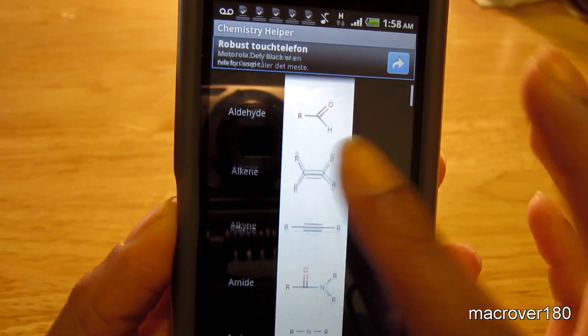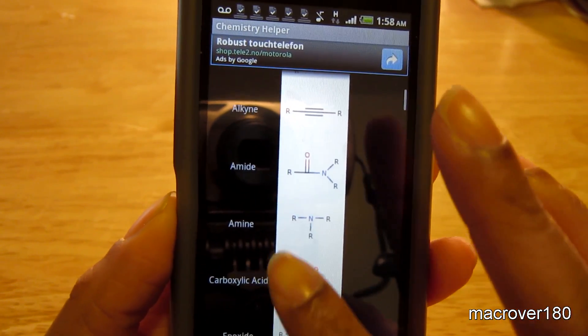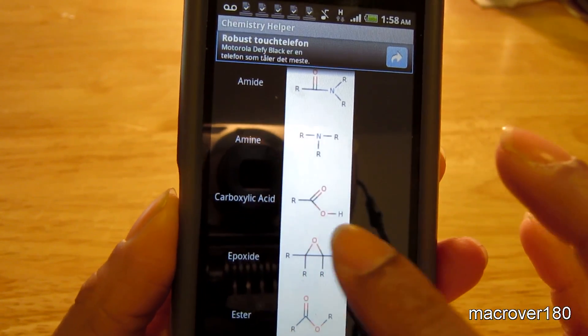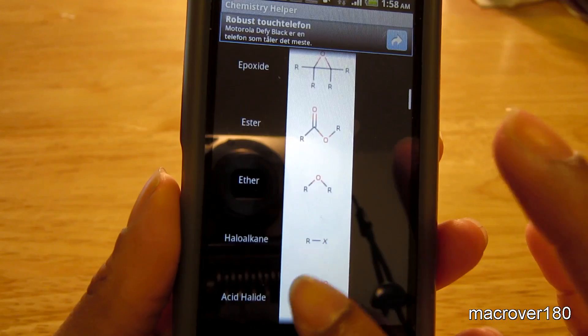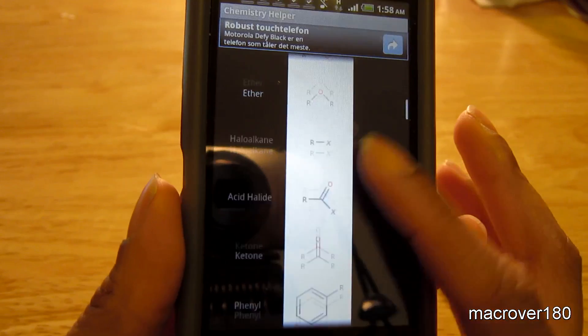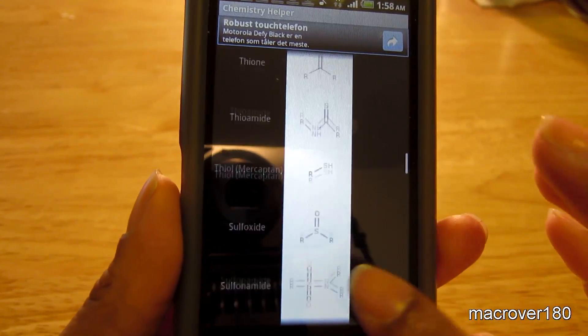You know, alcohol, aldehyde, amine, carboxylic acid, ester, ether. So it has them all listed here.